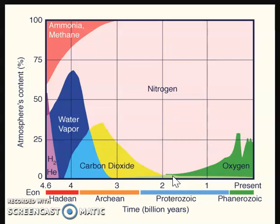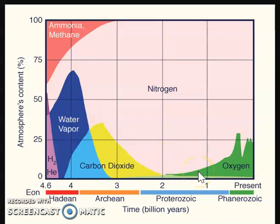A lot of these cyanobacteria are producing oxygen gas, but at first it's a very gradual climb. The reason for that is that a lot of the oxygen gas combines with iron dissolved in the oceans. As that oxygen and iron combine, they form a precipitate called iron oxide.